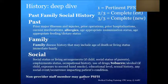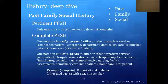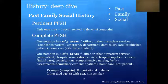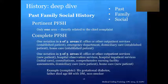Just like review of systems, guidelines permit a non-provider staff member to gather and record past family social history into the medical record. A pertinent past family social history is if only one area — past, family, or social — is documented. A complete past family social history depends on whether the patient is new or established. For a new patient, you need at least one element from all three. For an established patient, generally meaning seen within the past three years, you only need to document at least one element from two of the three.